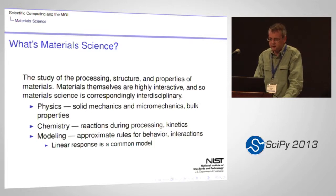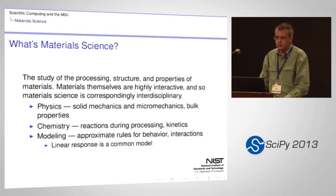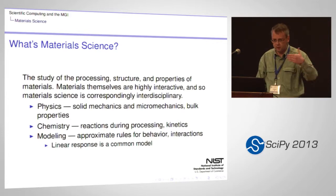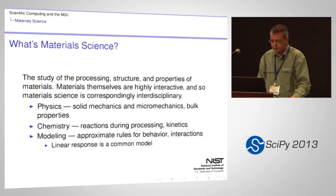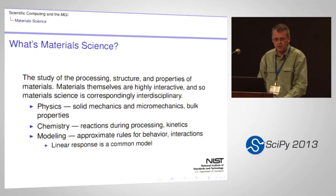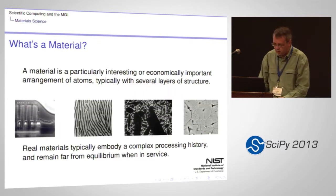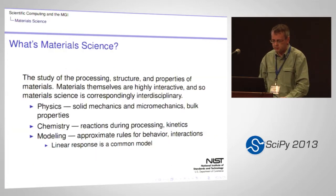Materials are highly interactive, and material science is correspondingly interdisciplinary. There's a lot of physics — solid mechanics, micromechanics, description of bulk properties. Chemistry is important for reactions that occur during processing, typically at high temperatures, and some chemical processes govern the kinetics or rates at which things happen. There's also a lot of modeling. Even before modern computational material science, there was a lot of modeling. Materials are sufficiently complex that even the most basic linear-response characterization of a material is itself already a model. The field is shot through with models and approximations.